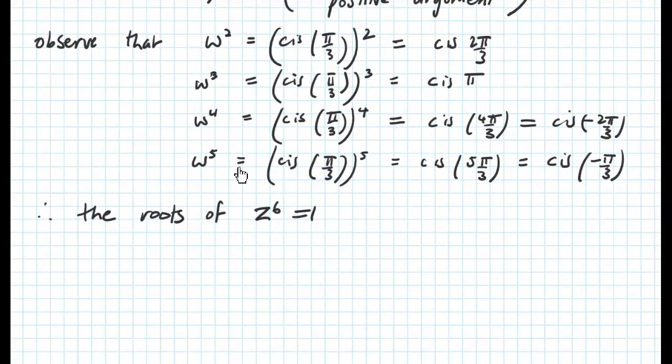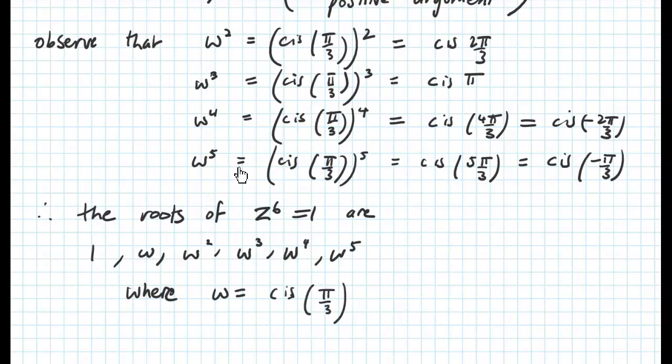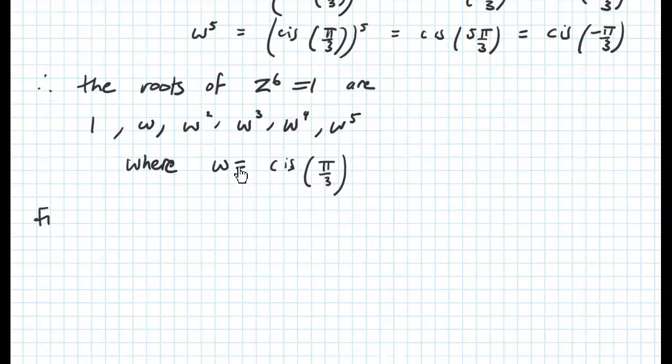So the roots of z to the 6 equals 1 are the solutions 1, w, w squared, w cubed, w to the power of 4, and w to the power of 5, where w is cis pi on 3.